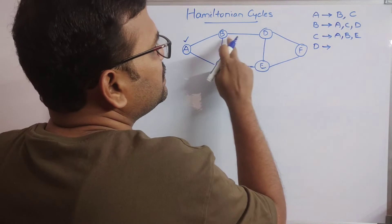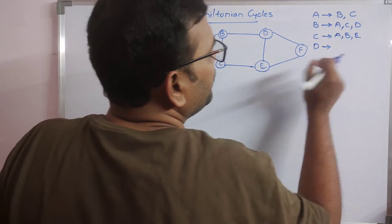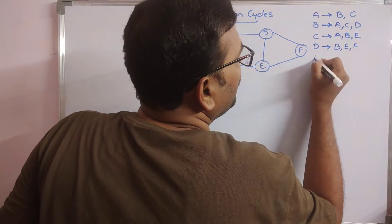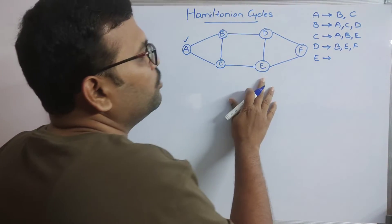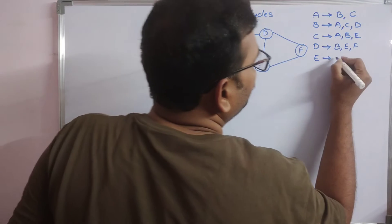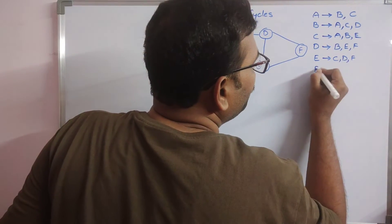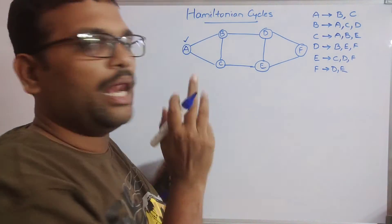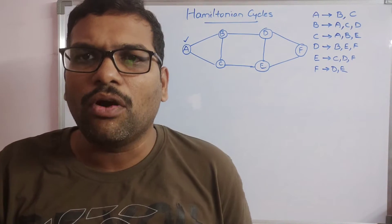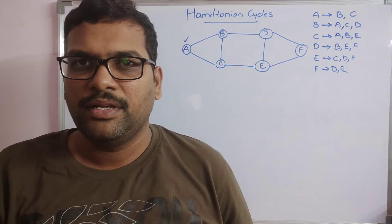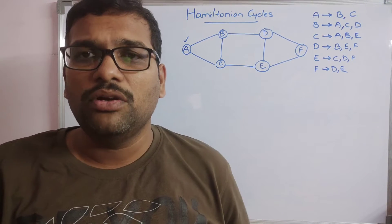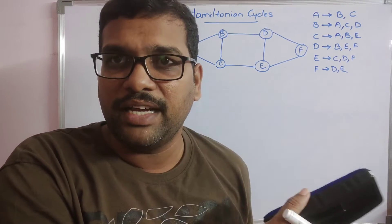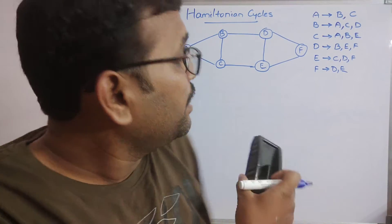Vertex C has outgoing edges to A, B, and E. Vertex D has outgoing edges to B, E, and F. Usually we call this an adjacency matrix, but instead of writing a full adjacency matrix I have written the adjacency lists. Now we start from the source vertex A.